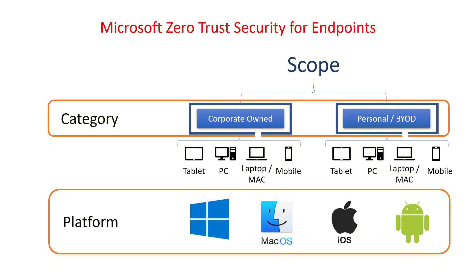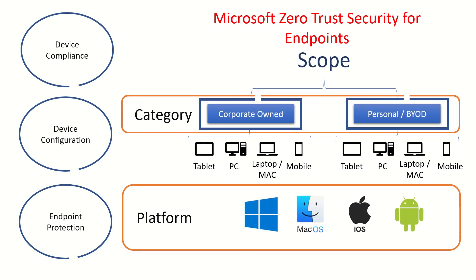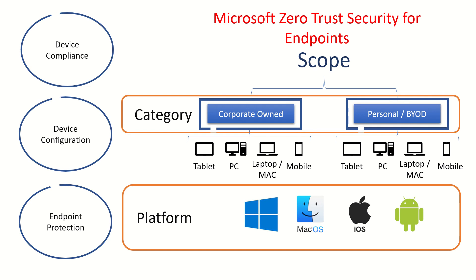To simplify things, you can break the entire configuration into three categories. The first is device compliance — a policy to check whether the device's configuration or health state falls under the category of being compliant for your enterprise. The second is device configuration itself — what kind of configuration should exist on a device, and you can deploy admin templates from Endpoint Manager. The third is endpoint protection, which relates to EPP or EDR capabilities.